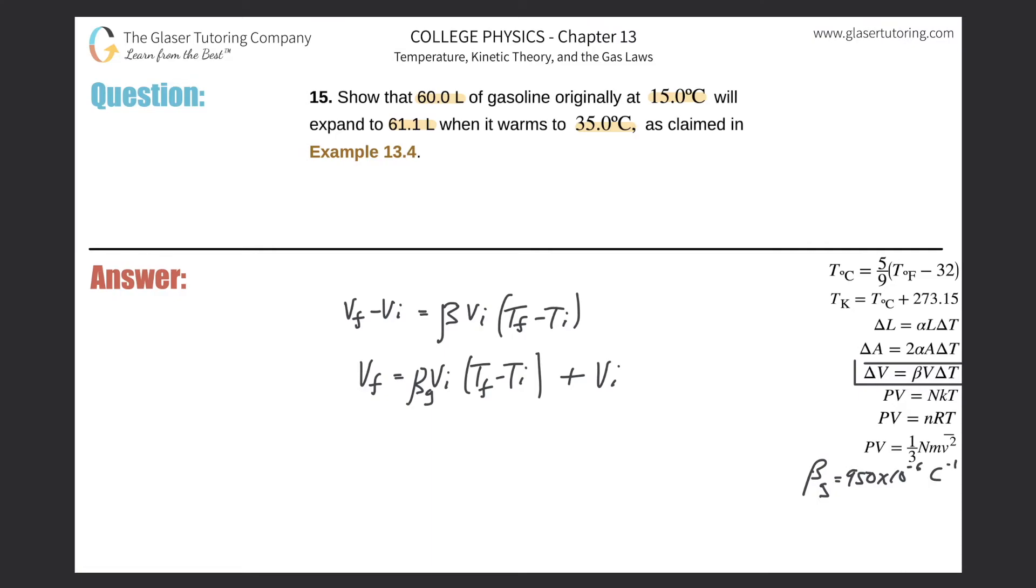Let's plug it in. The final volume will be equal to the coefficient, which you have to look up. This is 950 times 10 to the minus 6 multiplied by that initial volume of 0.06 cubic meters, times the final temperature which is 35 degrees Celsius minus the initial which is 15, then added to the original volume.